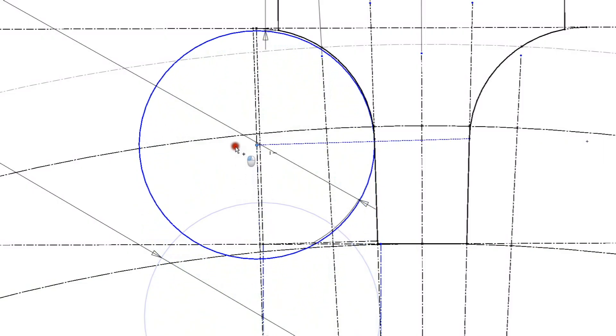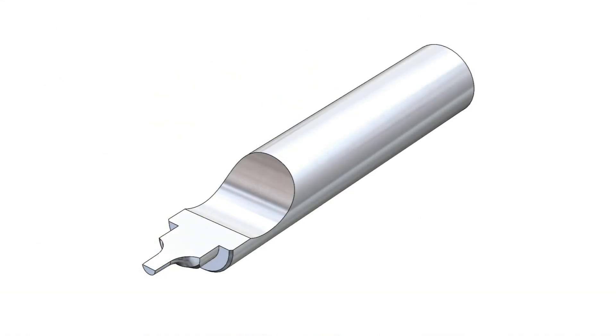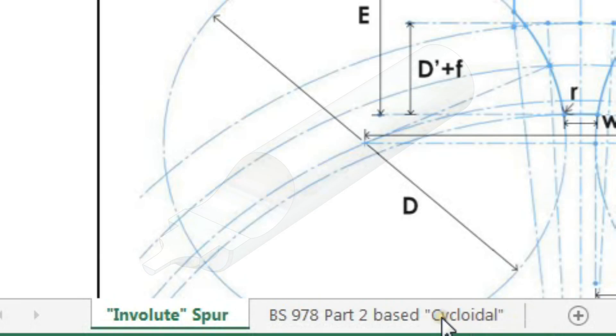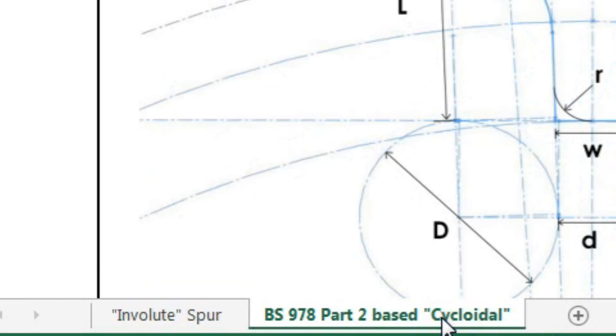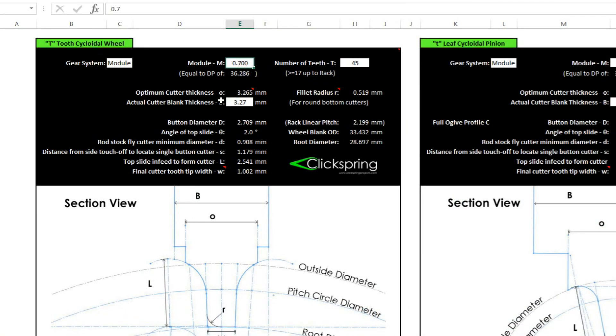Again, be sure to check out the gear cutter series for all of the detail, on how to make a wide variety of cutter types, and to follow along with what I'm about to do here. I'm going to start by making a 0.85 module wheel cutter.